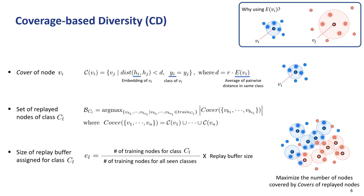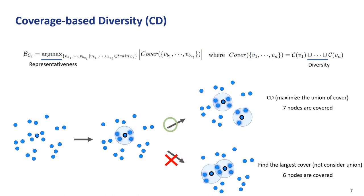We define the cover of a node as shown, and select the replay nodes maximizing the number of nodes covered by the union of covers of replay nodes. By doing this, we can ensure the replay nodes have both representativeness and diversity.